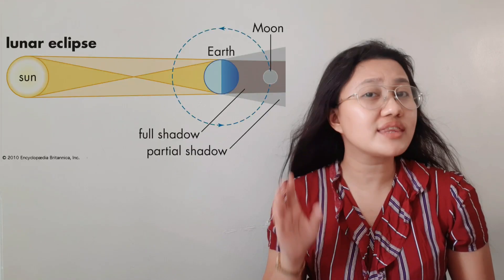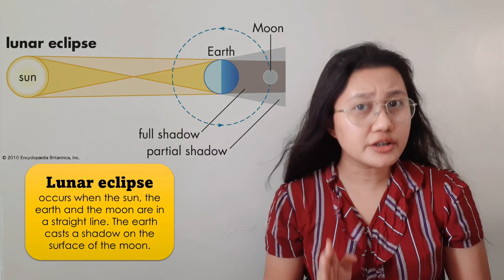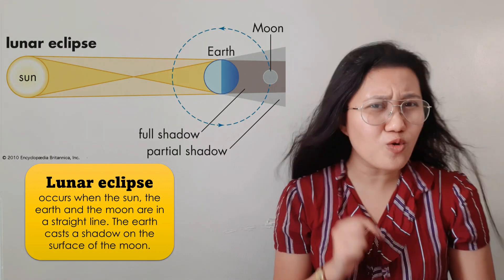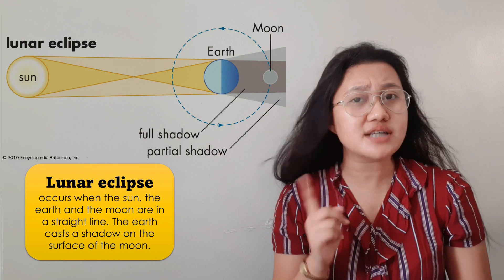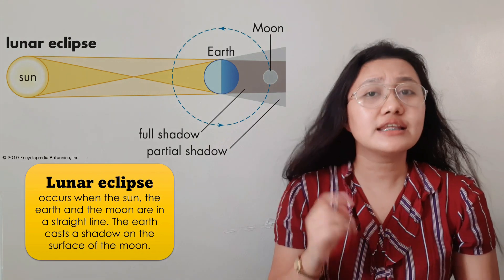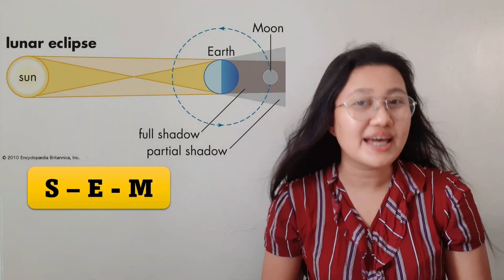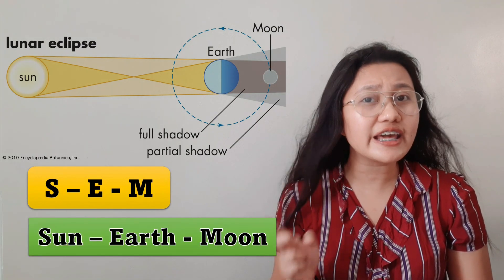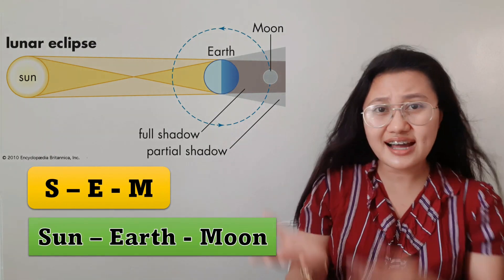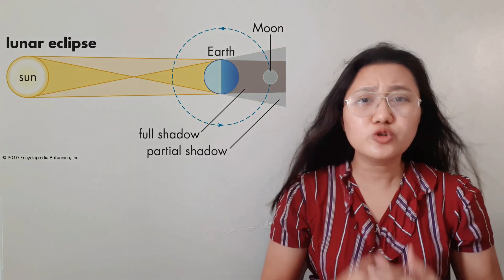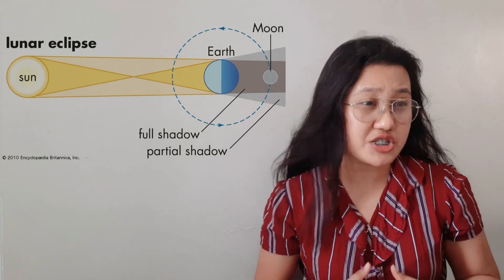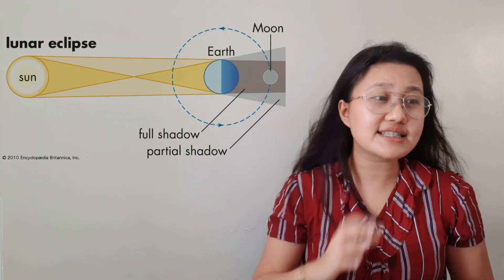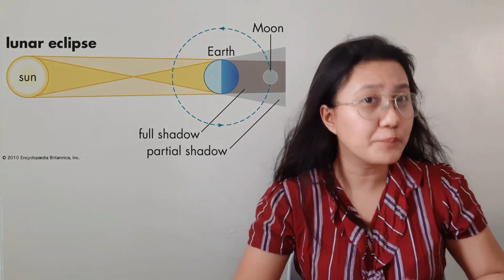While for the lunar eclipse, the acronym is SEM — Sun, Earth, and Moon. During a lunar eclipse, the sun, the earth, and the moon are in a straight line, and the earth casts a shadow on the surface of the moon.